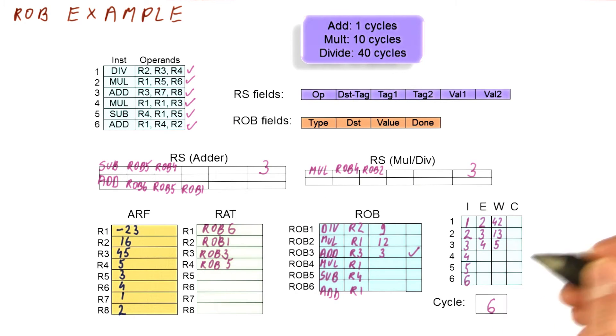And then we're going to mark that R1 from now on is pointing to ROB6. So with this, we have issued this instruction. Now, we have written the result of this instruction. So technically, this instruction by itself could commit in cycle six. However, remember that an instruction cannot commit until all previous instructions have committed.